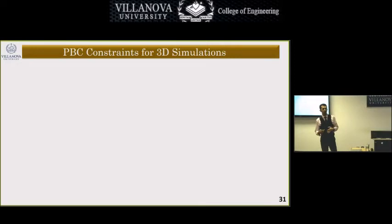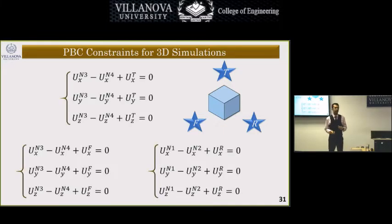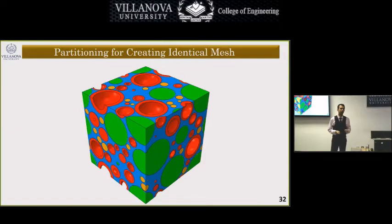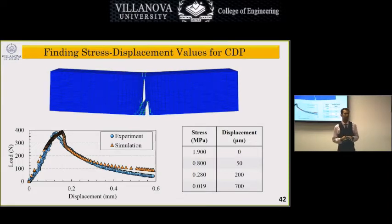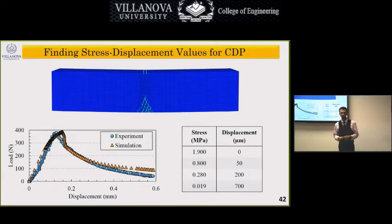Arguably the most difficult part is applying periodic boundary conditions. In theory, we define top, right, and front dummy nodes, and all nodes on the edges are connected to the dummy nodes via sets of equations. However, the meshes on opposite edges won't be identical, making this approach ineffective — a problem that researchers are still actively working on. We attribute specific material property values to the matrix, assuming that all failures, cracking, and related phenomena take place there.